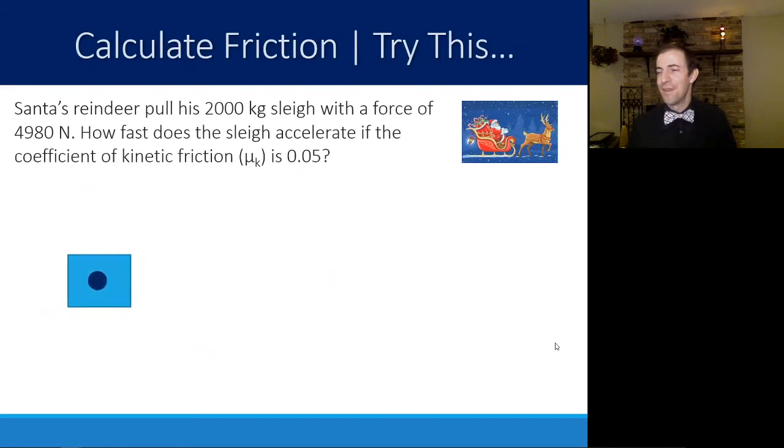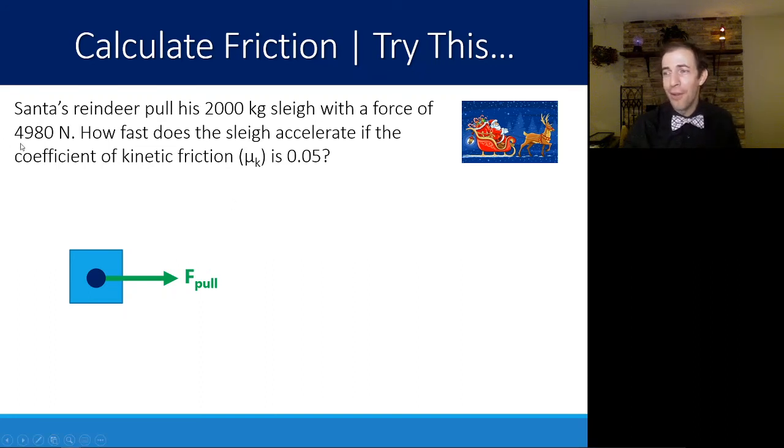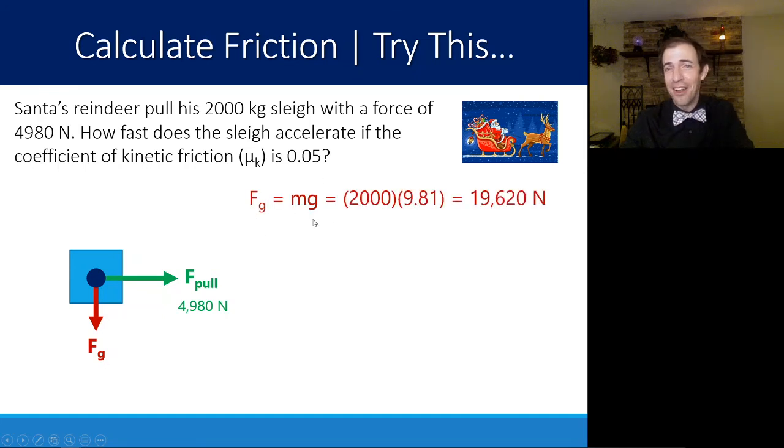Let's plug in those variables and say that our sleigh has started to move. We got a sleigh that's 2,000 kilograms. We want to know how fast it's going to accelerate if the reindeer are now pulling with 4,980 newtons of force. Since we have a mass, we have force of gravity, we have a weight that's calculated the same thing that we did before. 2,000 times 9.81 is equal to 19,620.